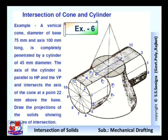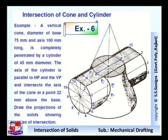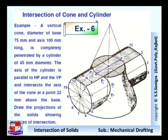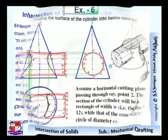Next is problem number six — problem five is longer, so we skip that. Problem number six: A vertical cone with diameter of base 75 mm and axis 100 mm long is completely penetrated by a cylinder of 45 mm diameter. The axis of the cylinder is parallel to HP and VP and intersects the axis of the cone at a point 22 mm above the base. Draw projections of the solids showing the curve of intersection. Here, a cylinder and a cone are shown; this is the cylinder and the vertical cone.